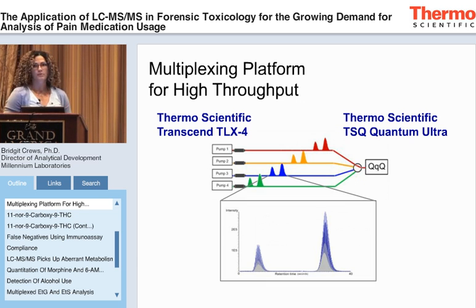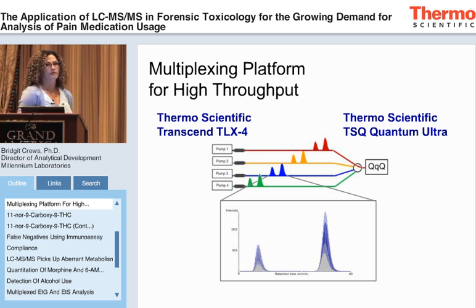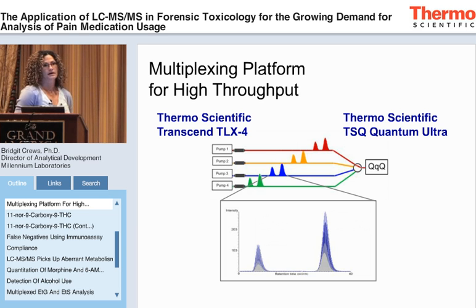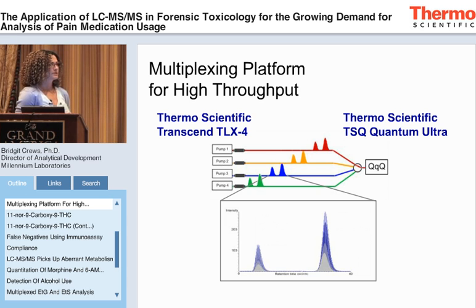In addition to simple sample prep, we need the fastest mass spec method we can run, and we're achieving that with a multiplexing platform. This is the Transcend LX4 system, where we have the ARIA multiplexing LC on the front and the TSQ Quantum Ultra triple quad as our detector. We have four pumps and four channels — we offset our LC runs to maximize detector efficiency. You don't have to wait for your sample to elute or while washing and re-equilibrating your column, achieving about a 40-second run time.